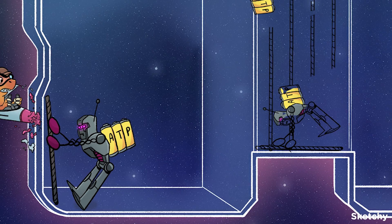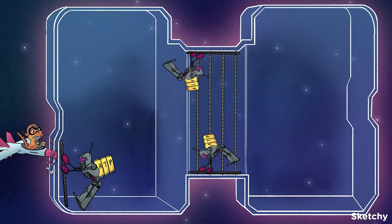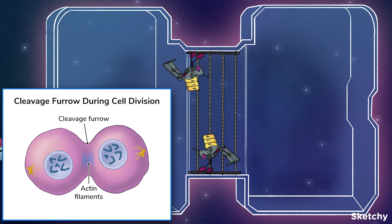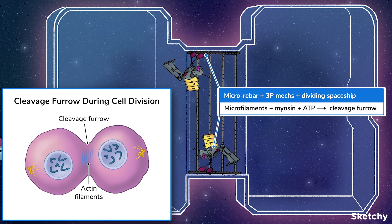Microfilaments also play a crucial role in cytokinesis, the final step in cell division. After telophase, microfilaments form a ring between the two replicated nuclei. The actin in the ring interacts with myosin and contracts, creating what's called a cleavage furrow. Eventually, the cell is squeezed all the way in and is separated into two new daughter cells. You can see the center of the spaceship is pinched in like a cleavage furrow, and some more mechs are tugging that micro rebar to divide this spaceship in two.